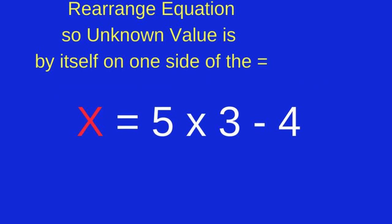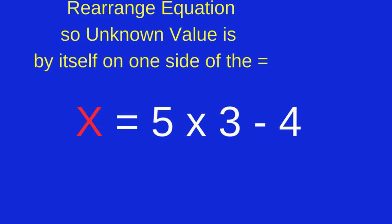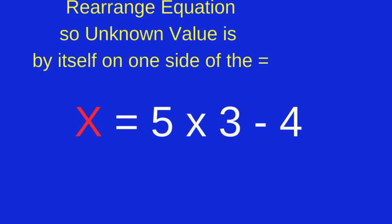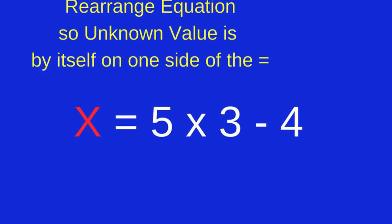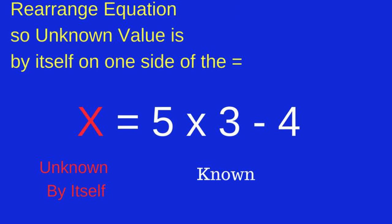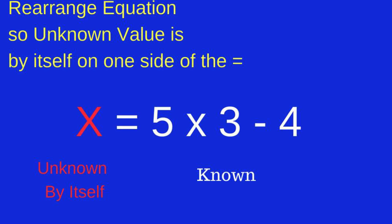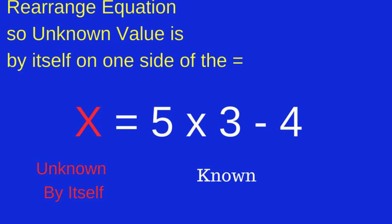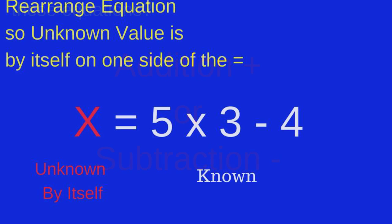Our key strategy is to rearrange the equation so that the unknown value is by itself on one side of the equal sign. We want to get the unknown value by itself and all of the known values on the other side of the equal sign.